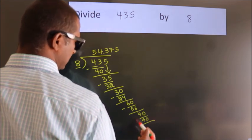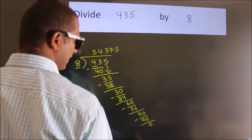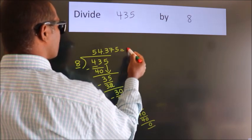Now we subtract, we get 0. Here we got remainder 0. So this is our quotient.